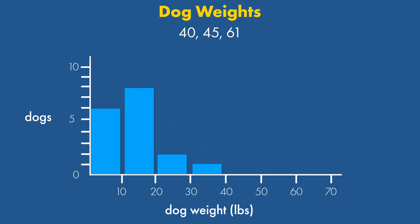Our 40 to 49-pound bin gets the 40 and 45-pound dogs. In our data set, there aren't any dogs in the 50 to 59-pound range, so we'll skip it and add our last dog to the 60 to 69-pound bin and draw a bar with a height of 1.